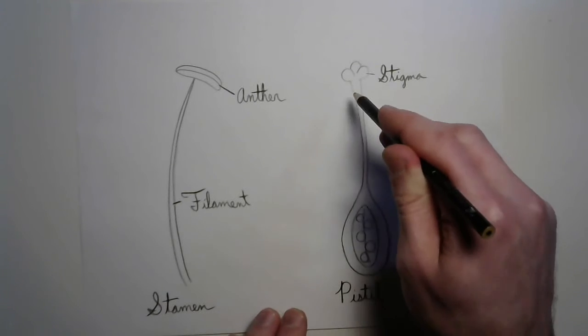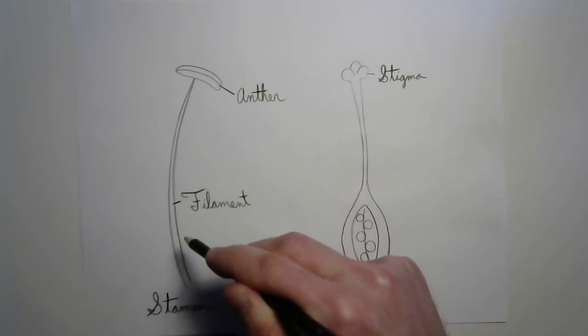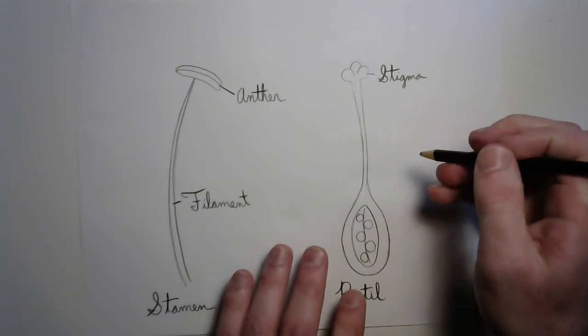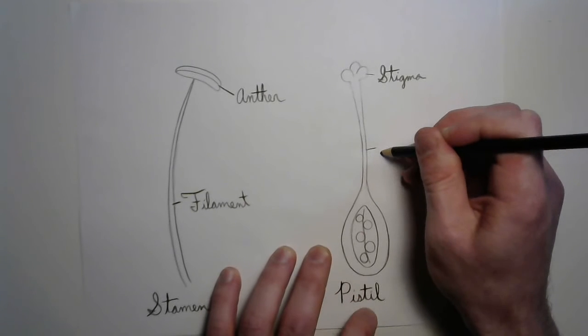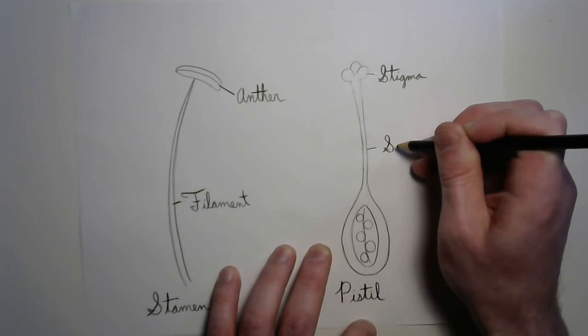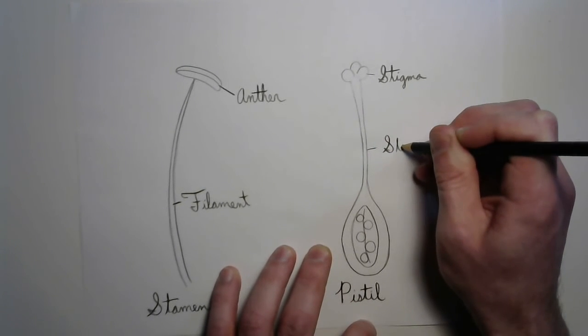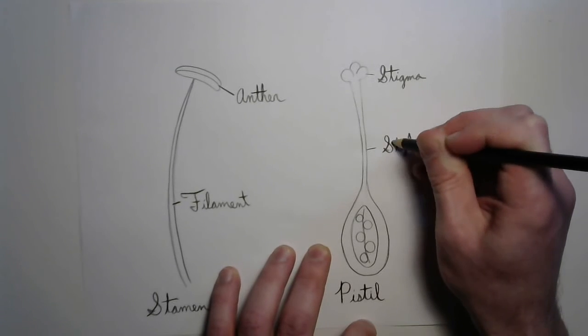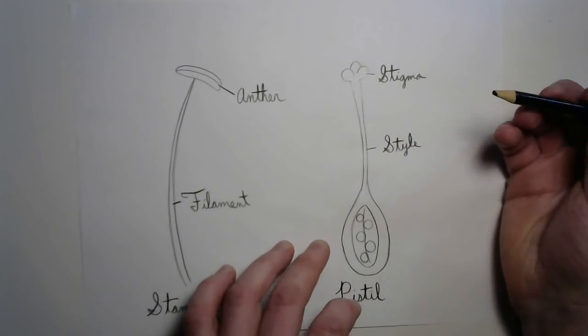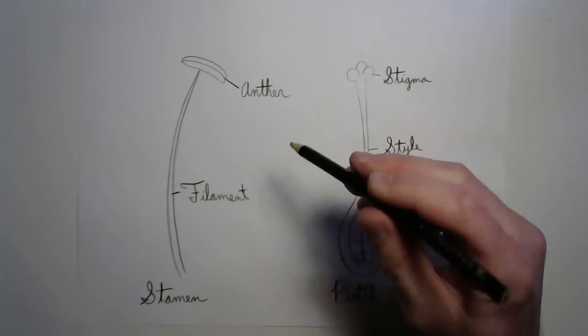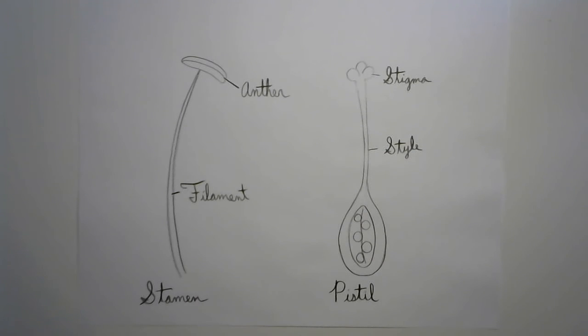And it's supported on another piece, just like how the anther is supported by a filament. The stigma is supported by what we call a style. That comes from the Greek word stylus, like a writing tool. Sort of looks like a writing tool, huh? Very cool.